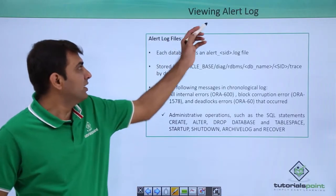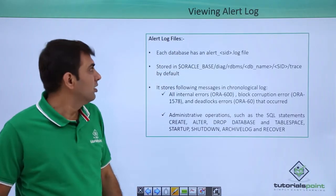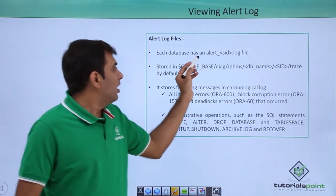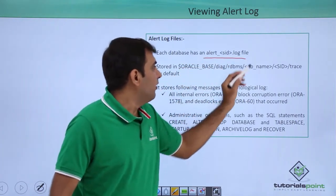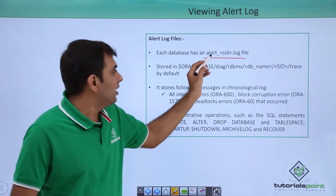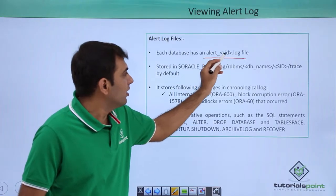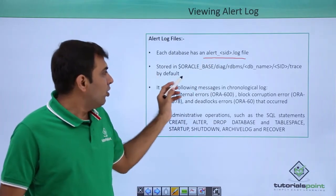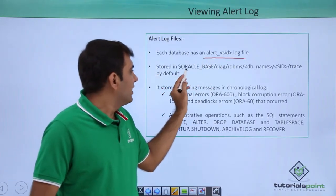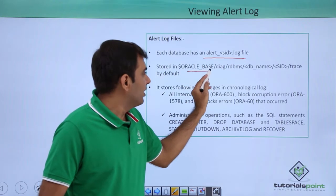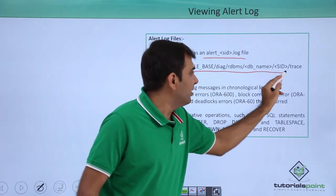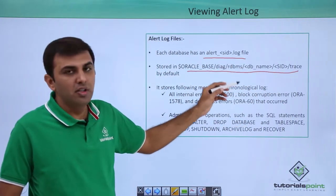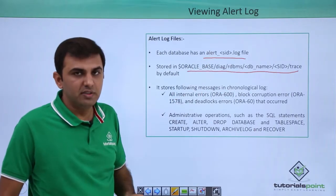First, what is alert log? Each database has an alert log file and the name of the alert log is alert_[SID name]. It is stored by default in this location: oracle_base/diag/rdbms/db_name/SID/trace. So in this location you can find your alert log file.